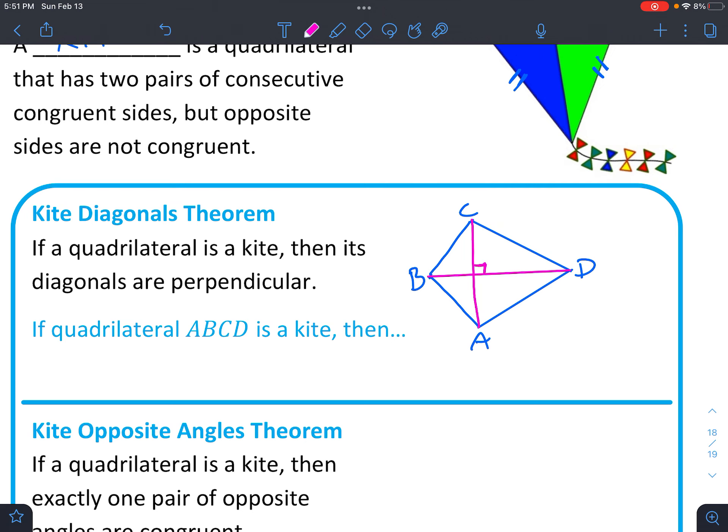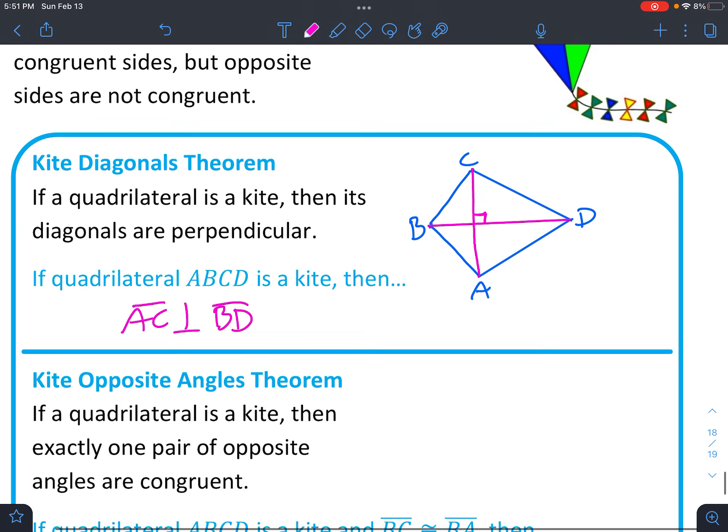So in our example, if quadrilateral ABCD is a kite, then AC has to be perpendicular to BD.